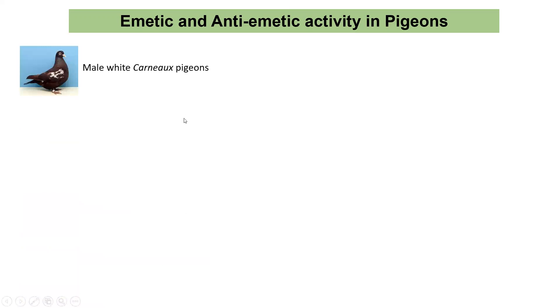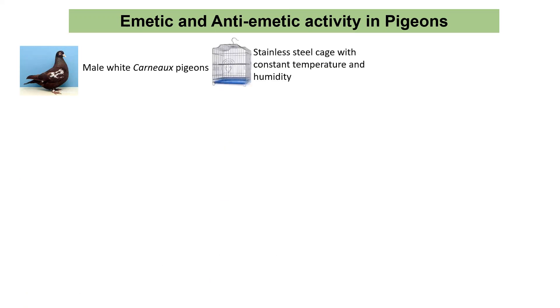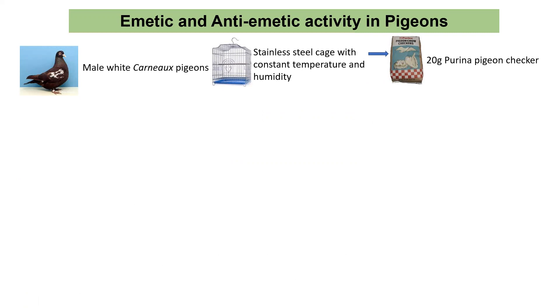The third method is emetic and anti-emetic activity in pigeons. Male white Carneau pigeons are used. These animals are kept in stainless steel cages at a constant temperature and humidity. The pigeons are maintained with once-daily feeding of approximately 20 grams of Purina pigeon chow.